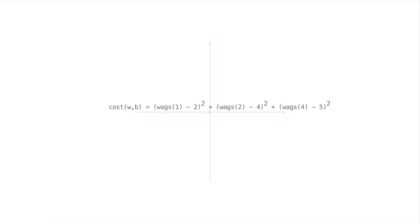So in the last video we came up with this cost function, and really for each data point we have this term here. And so for the 1, 2 data point, if you remember the data was the number of pats leading to the number of wags.